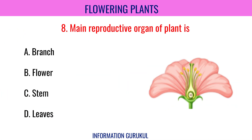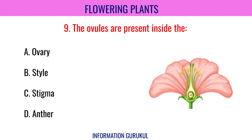The main reproductive organ of a plant is the Flower. The ovules are present inside the Ovary.